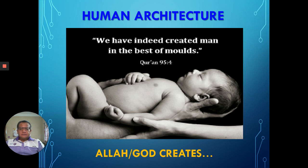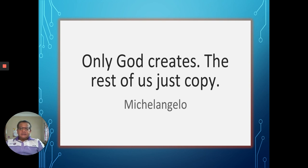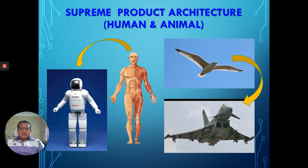Only God creates; the rest of us just copy what God has created — this is according to Michelangelo. Let's do some reflection on product architecture. For example, Honda Asimo is a robot simulating a human, and even this human creation also follows the human form with head on top.